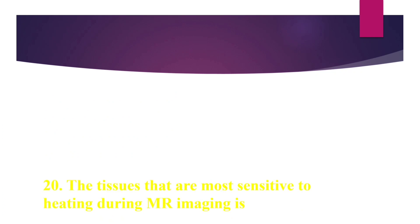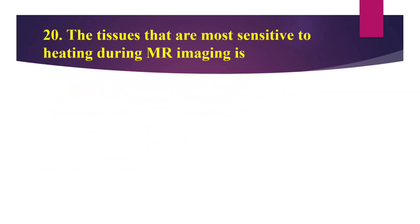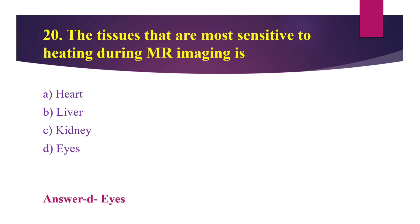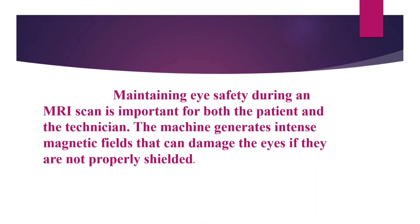Moving on to question 20. The tissues that are more sensitive to heating during MR imaging are: option A, heart; option B, liver; option C, kidney; or option D, eyes. The answer is option D, eyes. Maintaining eye safety during an MRI scan is important for both the patient and the technician. The machine generates an intense magnetic field that can damage the eyes if they are not properly shielded.